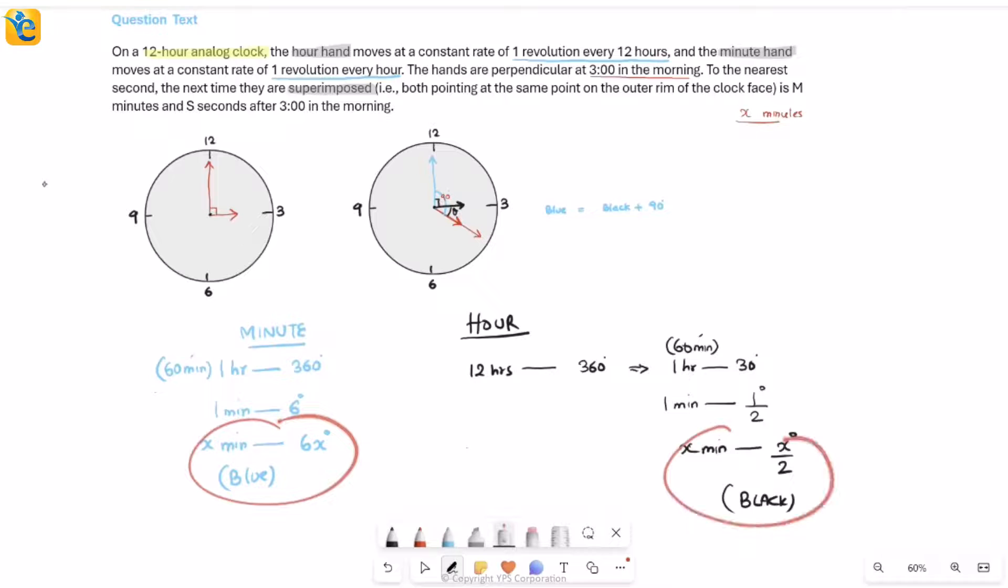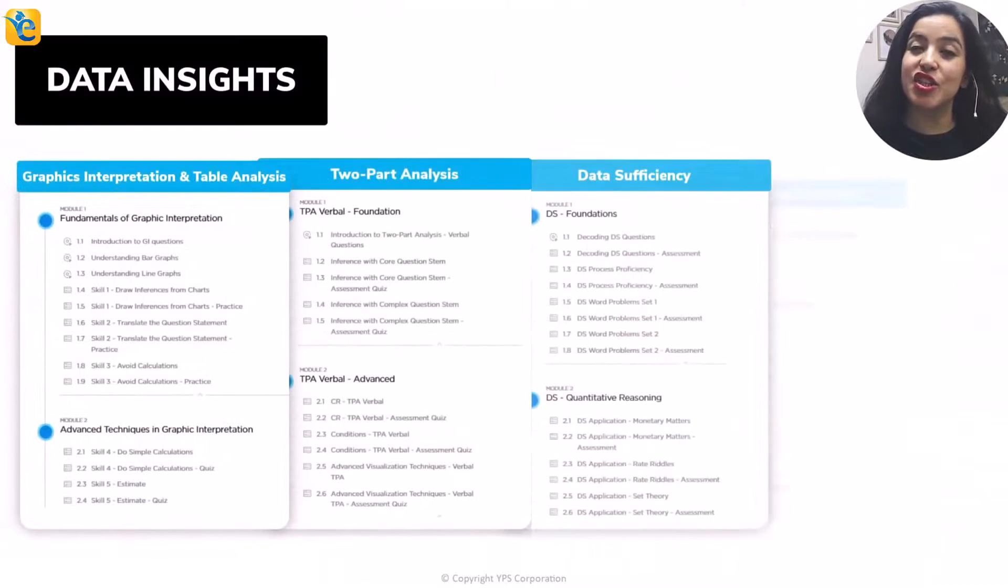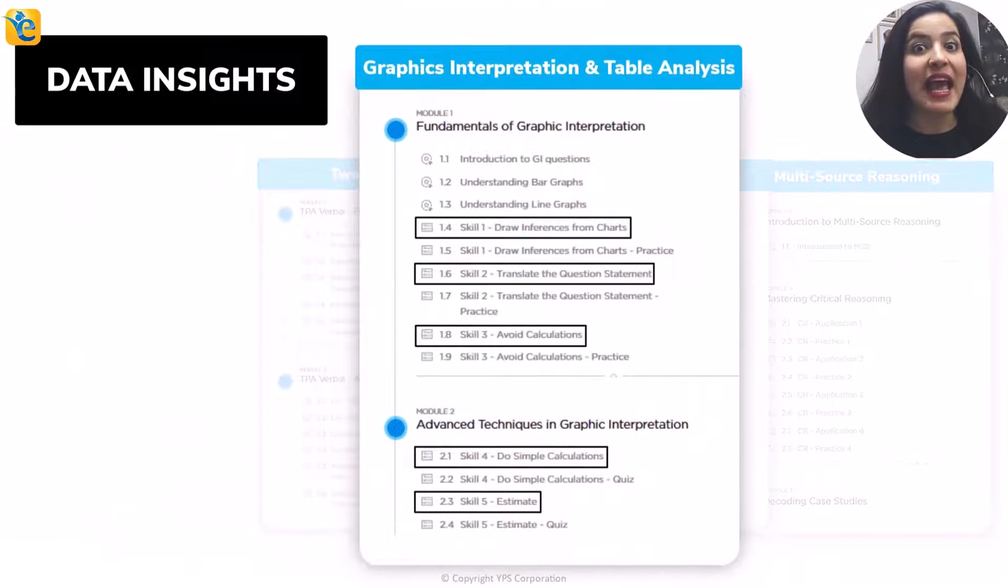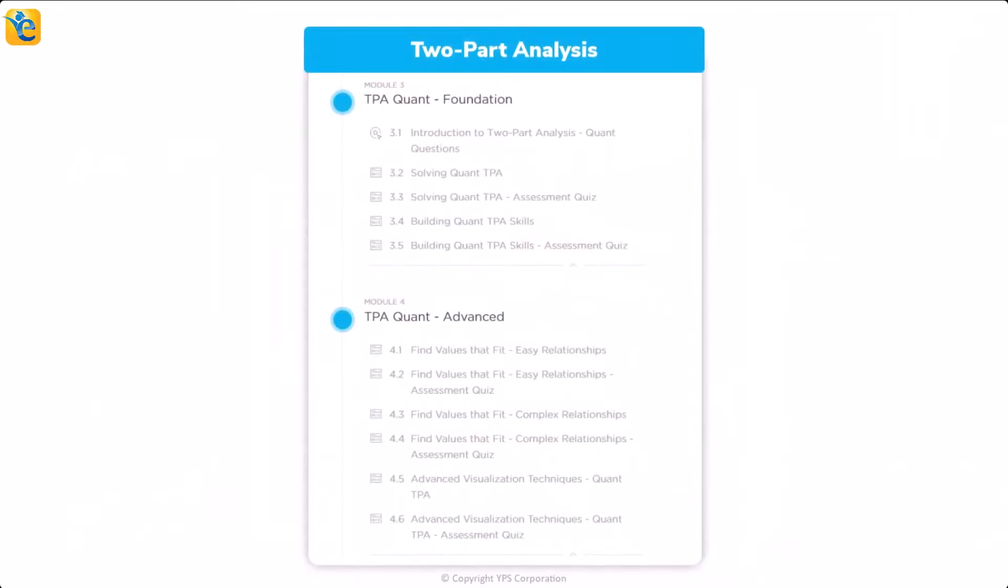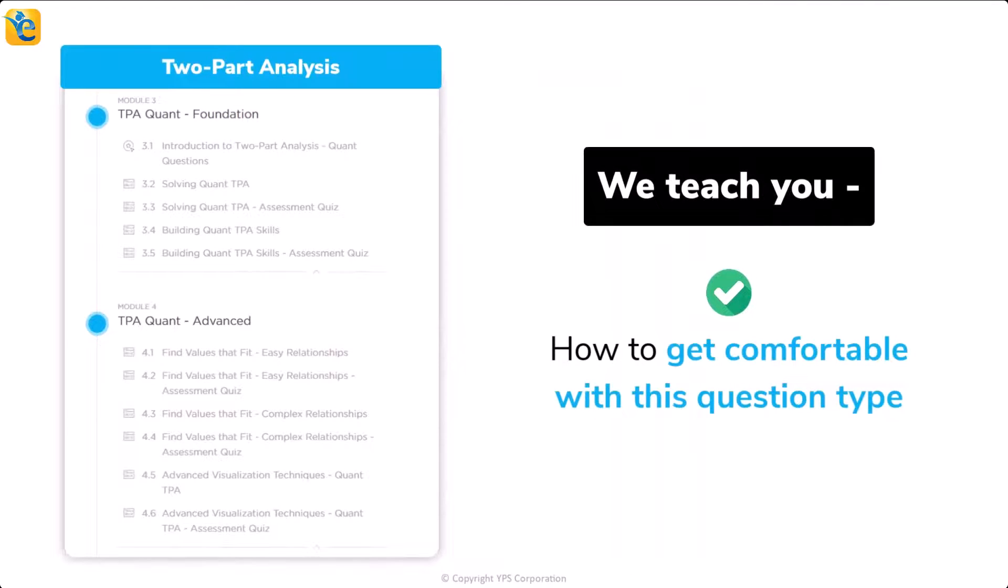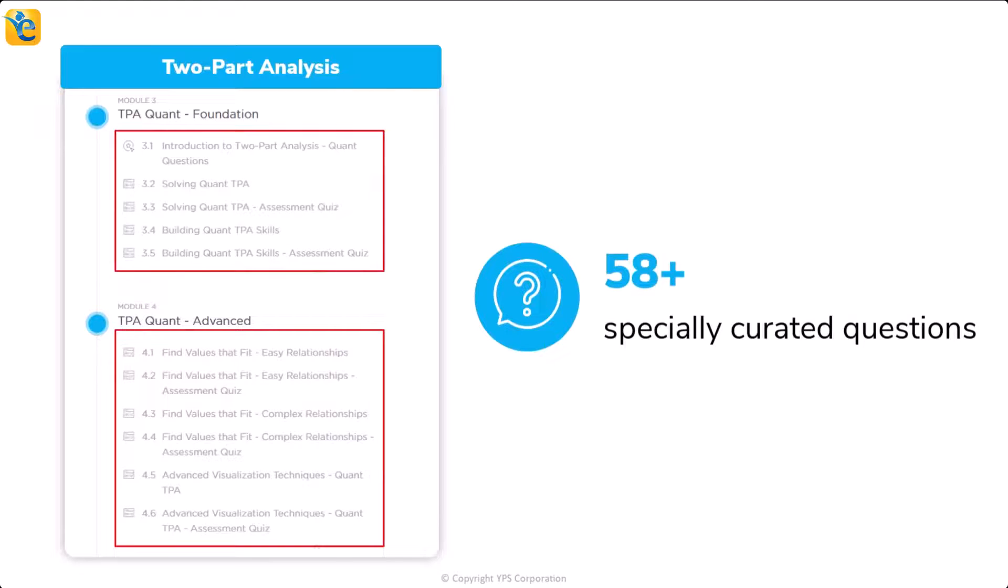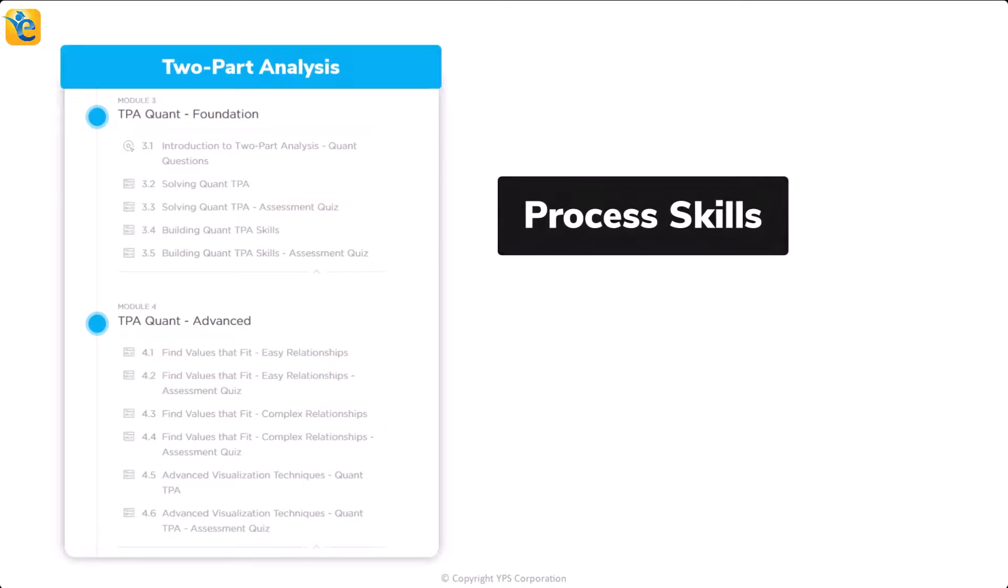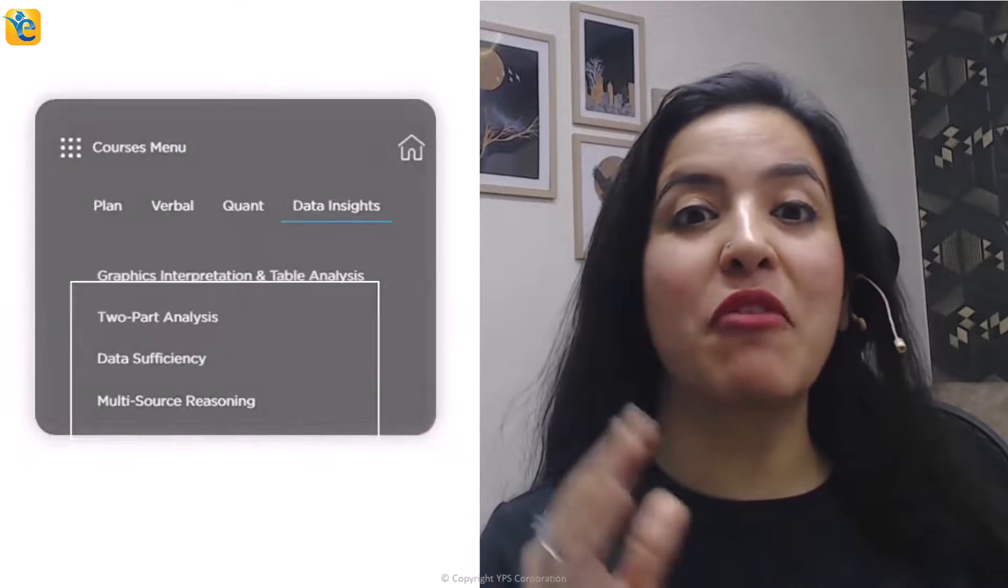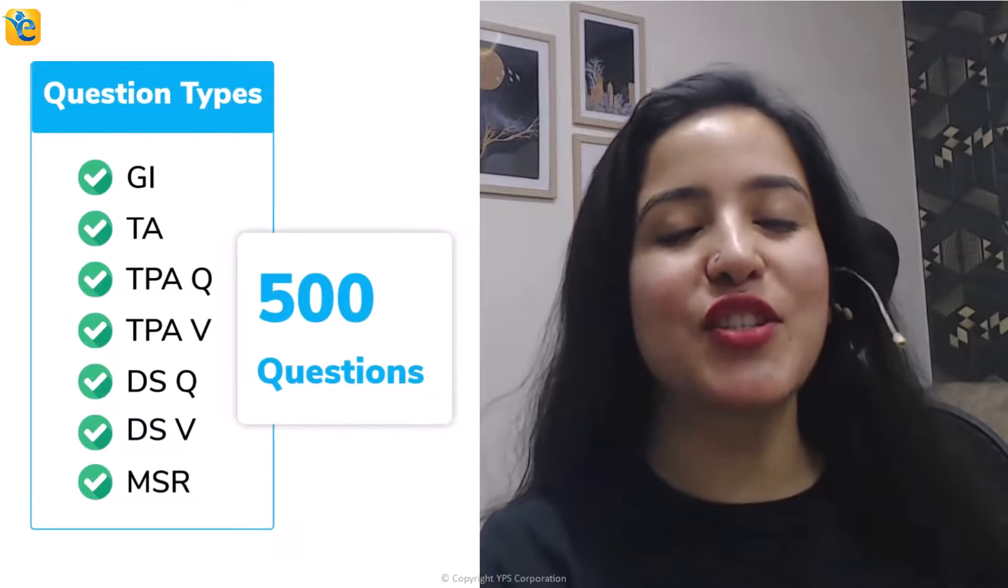At this point, let me ask you this. Could you have arrived at the approach of solving this question with this level of clarity had you not spent the effort in thoroughly understanding the information presented? Such is the power of the process of owning the data set. And because this skill may not come naturally to many of you, we have created a course architecture that ensures that we teach you this skill through every guided quiz in the EGMAT DI course. And we reinforce the same in every practice quiz. In fact, in the TPA quant modules in the two-part analysis course, we teach you how to get comfortable with this question type. You will gain the confidence to handle any question of this type in the most efficient manner. We serve more than 58 specially curated questions at the right progression so that you can learn various aspects of this question type, including the process skills of inference, translate, and visualize. Thus, throughout the DI course, through around 500 questions, you will learn such process skills so that you can also comfortably use the owning the data set approach. Let's now get back to the solution at hand.